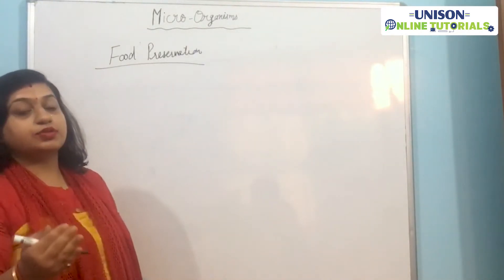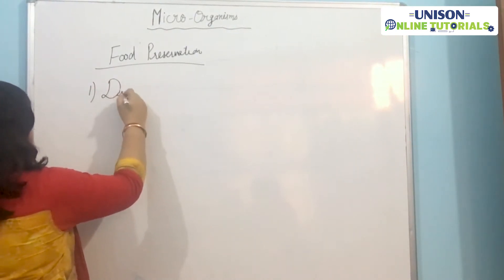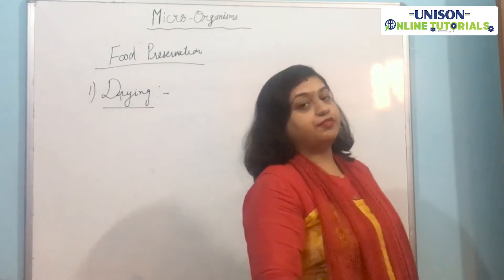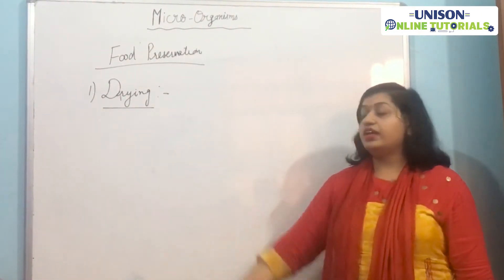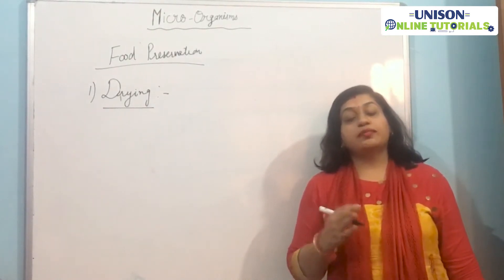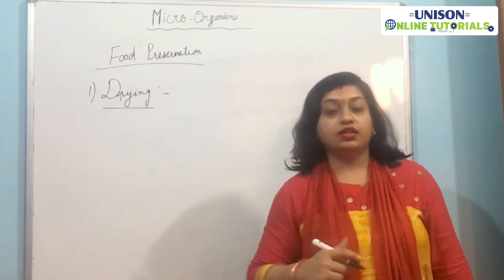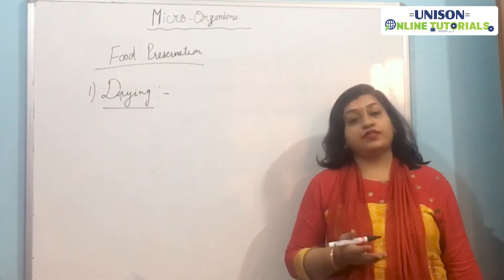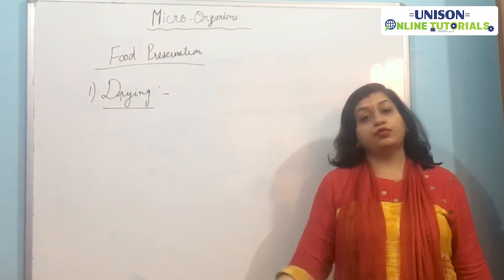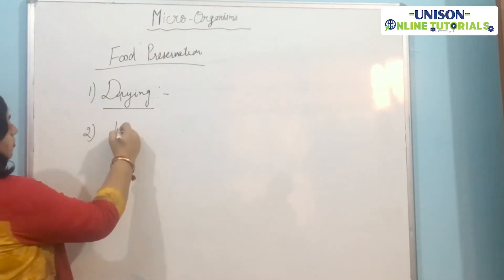Let's discuss the steps and methods one by one. The first method is drying. As discussed in the first chapter on crop production, drying reduces the water content in food, which stops the growth of microorganisms. Drying also reduces the weight, making food easily transferable and portable. Fruits and vegetables are preserved by the drying process.